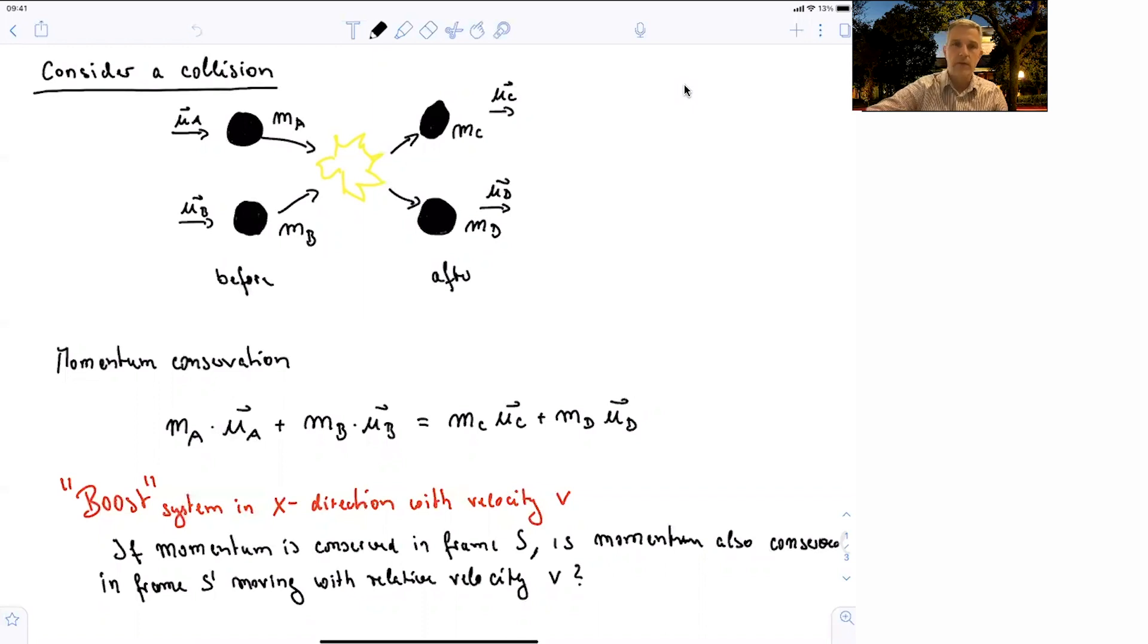We have this scenario here in which we have two balls colliding with velocities ua and ub, masses ma and mb. After the collision, the masses change to mc and md, and the velocities are uc and ud. Momentum conservation tells you that the product of the mass and velocities and the sum of the two particles before and after the collision is the same.